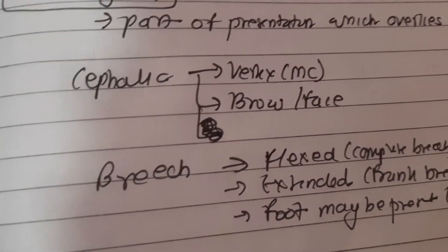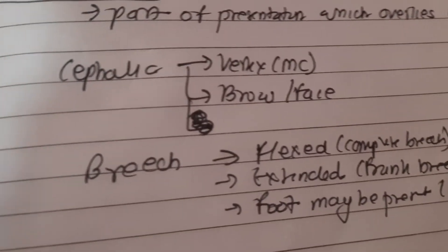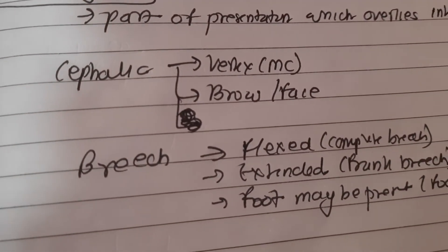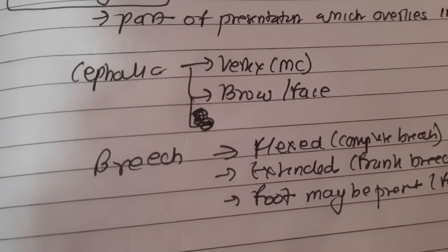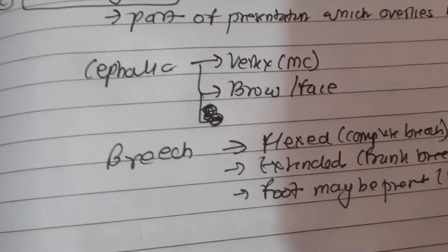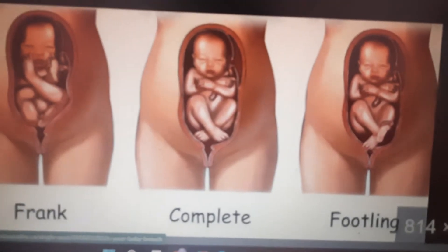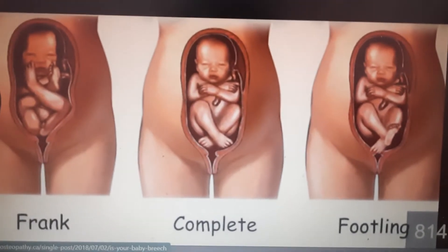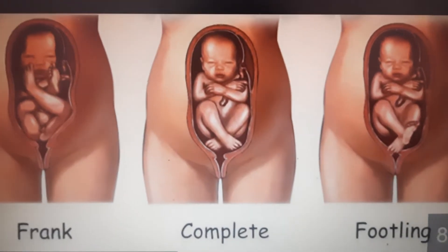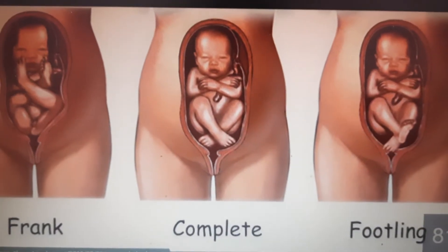In breech presentation, the presenting part may be the completely flexed breech (frank breech), completely extended (complete breech), or a foot may be presenting — known as footling. This diagram shows frank breech, complete breech, and footling presentations.